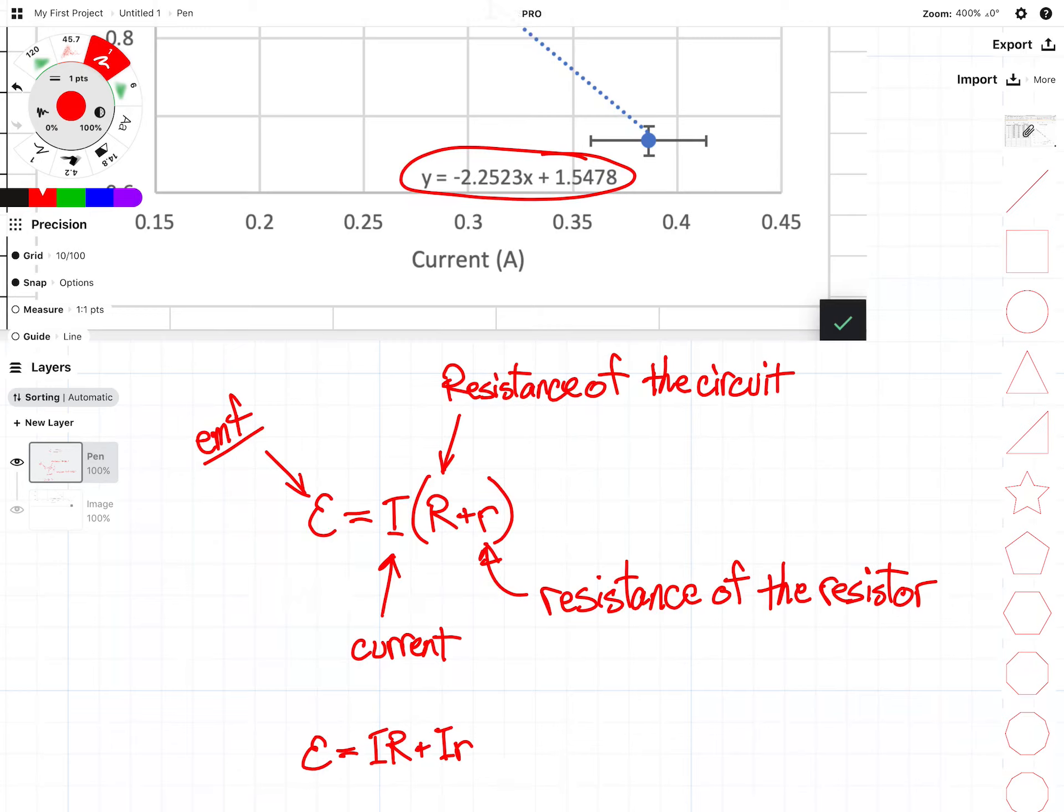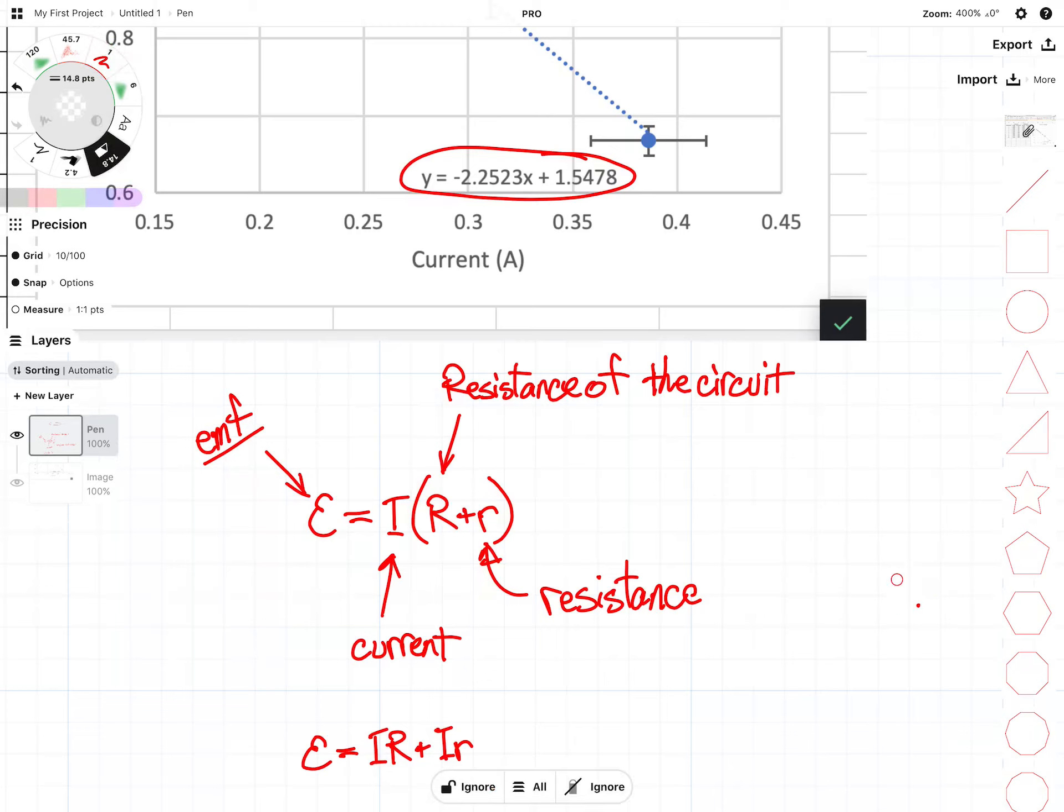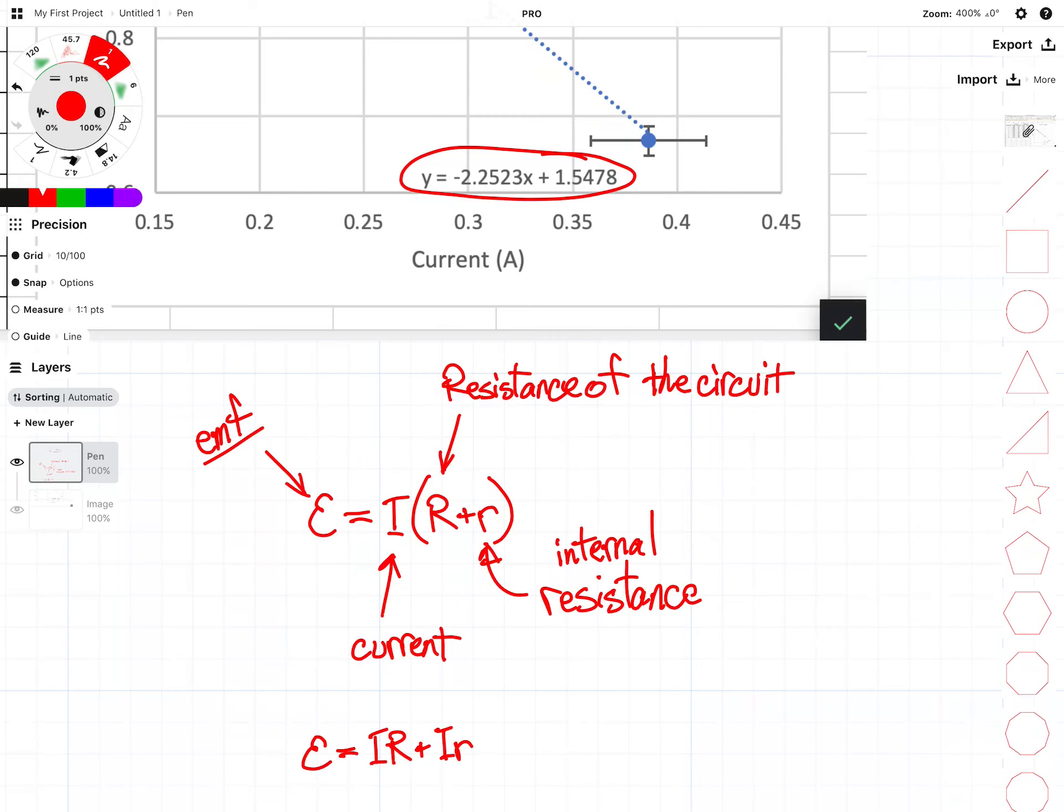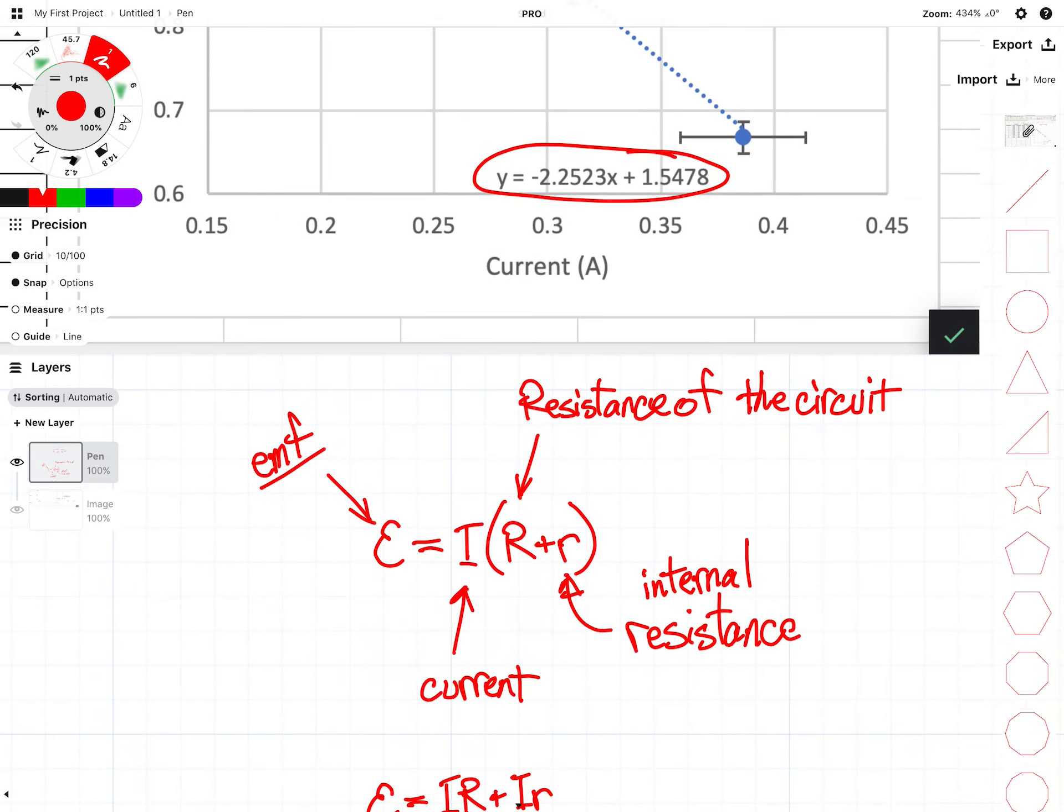We have the current through both the circuit and through the power supply. We then also have our small r, which is internal resistance. That small r is the internal resistance of our power supply.